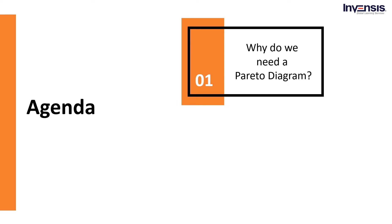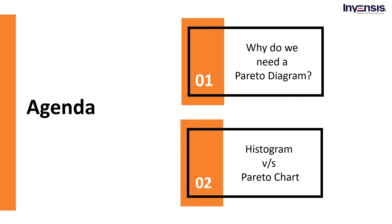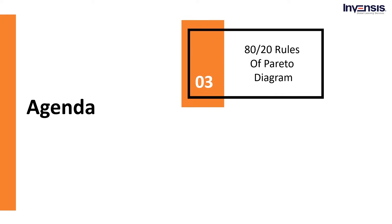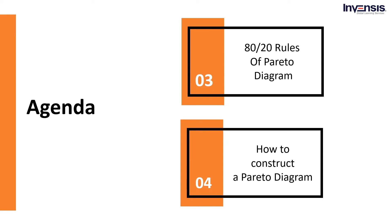Let us now discuss the agenda. This session is broken down into four sections. Firstly, we will discuss a Pareto Diagram and why we need it. Then, we will understand the difference between Histogram and Pareto Chart. We will also talk about the 80-20 rule of the Pareto Diagram, and conclude the session by understanding how to construct a Pareto Diagram.